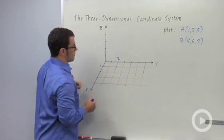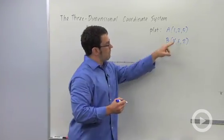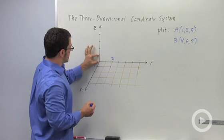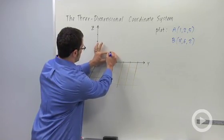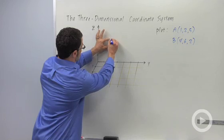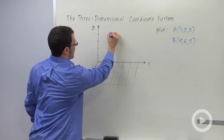And then for the third coordinate, 5, I just go up 5 units. So if this is one unit, I go 1, 2, 3, 4, 5. And this is going to be my point A.